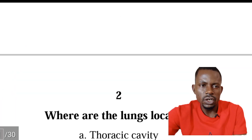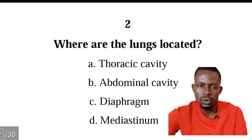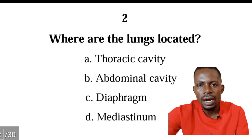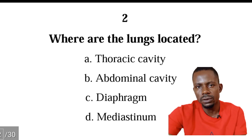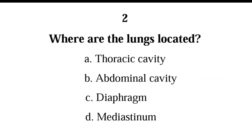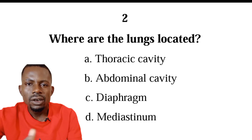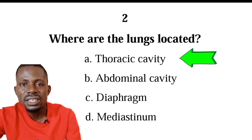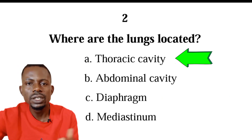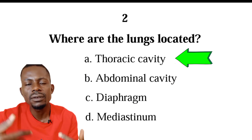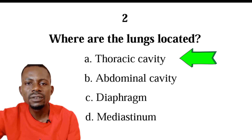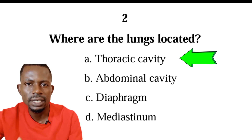The next question is: where are the lungs located? We have thoracic cavity, abdominal cavity, diaphragm, or mediastinum. The correct answer is A, thoracic cavity. Thoracic cavity is just a technical word for chest cavity — the space located right inside the chest. You have the right lung at the right side and the left lung at the left side of the thoracic cavity.